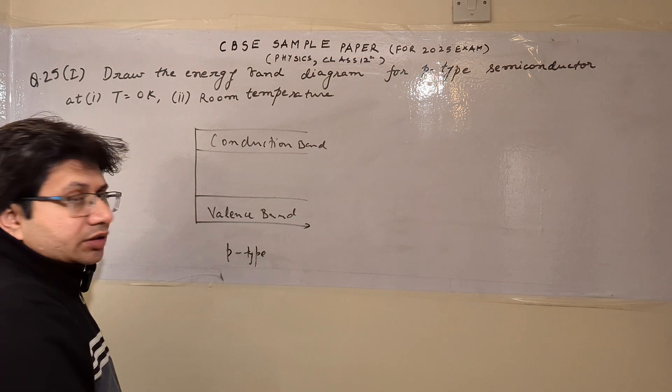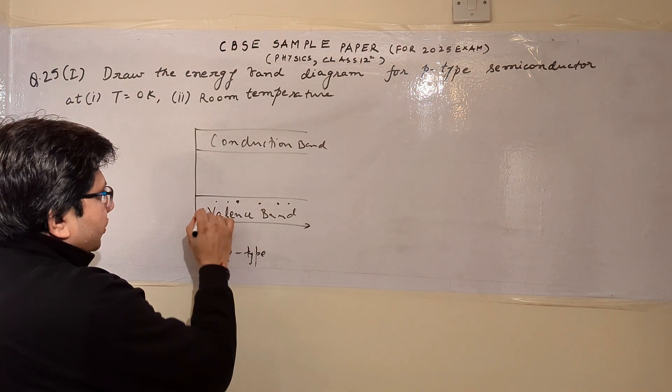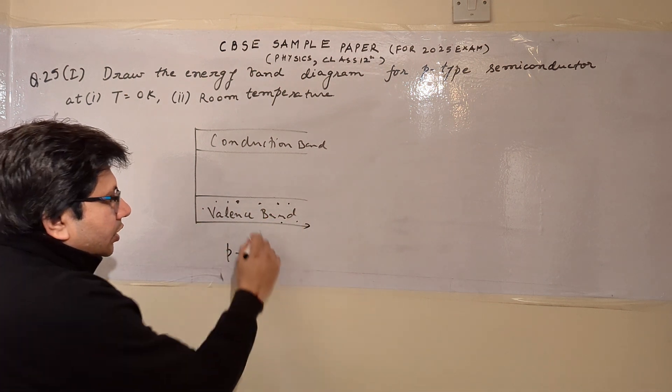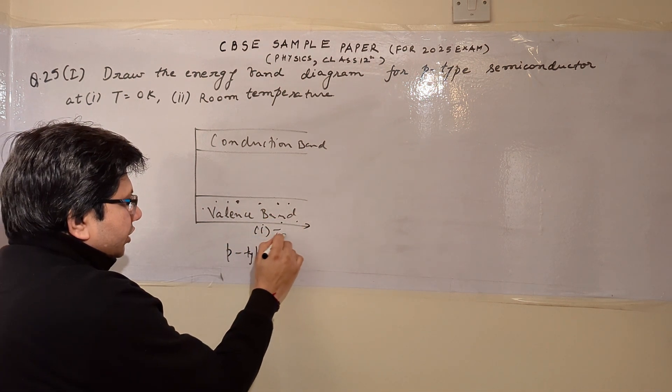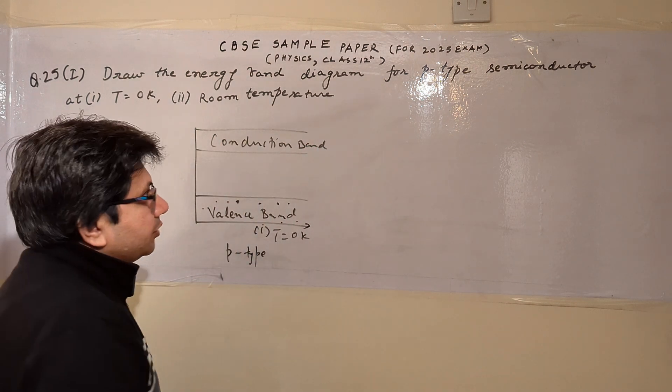So in the case of P-type semiconductor, most of the charge carriers reside in the valence band at T = 0 Kelvin, and none of the charge carriers are in the conduction band.